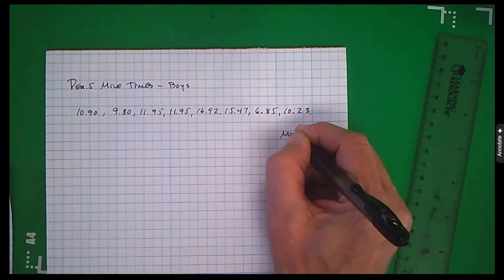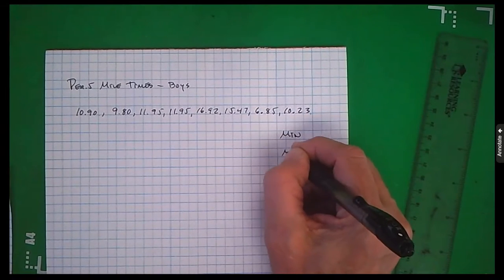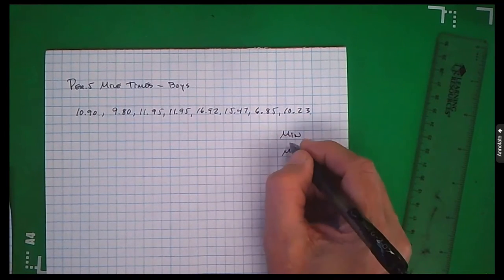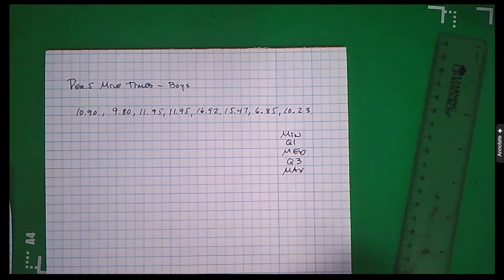Five number summary. We need min. We need max. We need median. We need first quartile. We need third quartile.